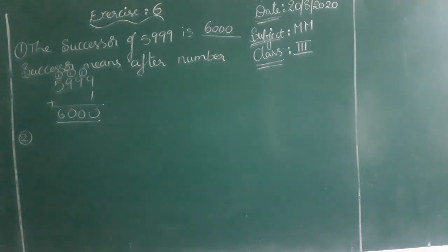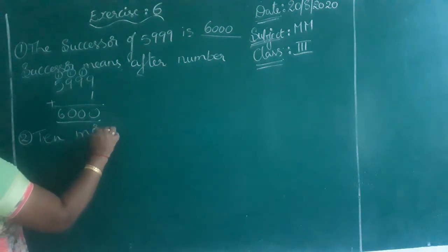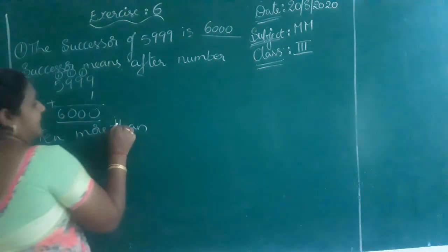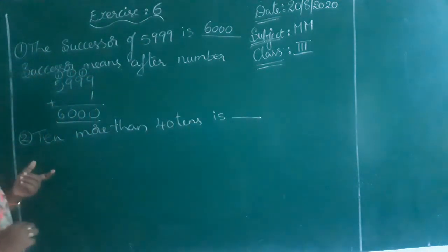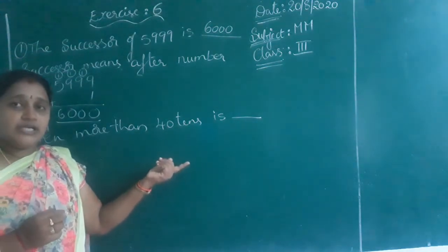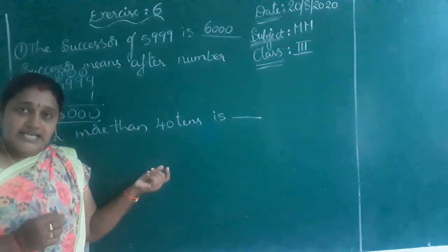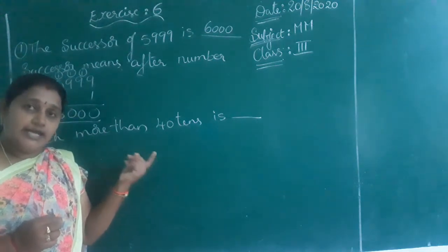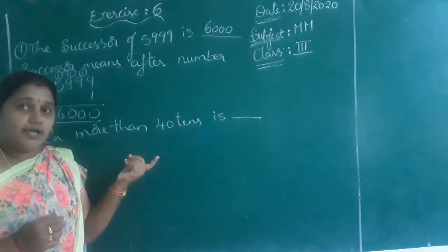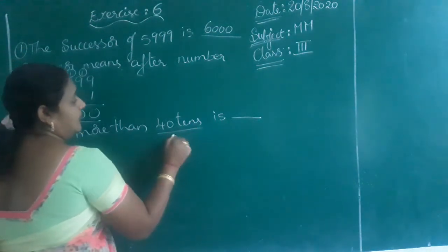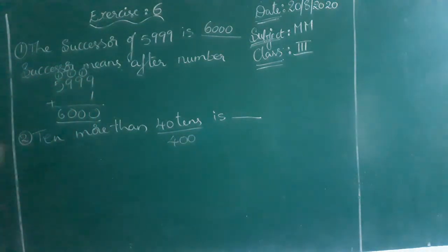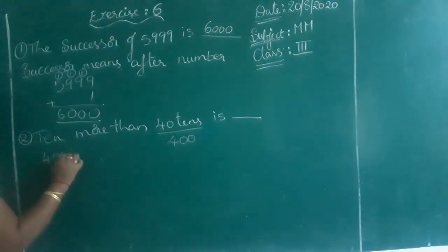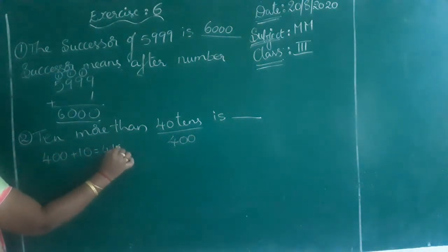Next one: 10 more than 4999. 1 ten is 10, 2 tens is 20, 3 tens is 30. Similarly, 10 tens is 100, 20 tens is 200. So we have asked 40 tens. 40 tens is nothing but 400. So 10 more than 400 is 410.